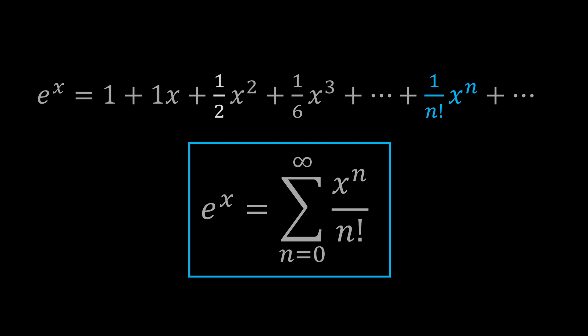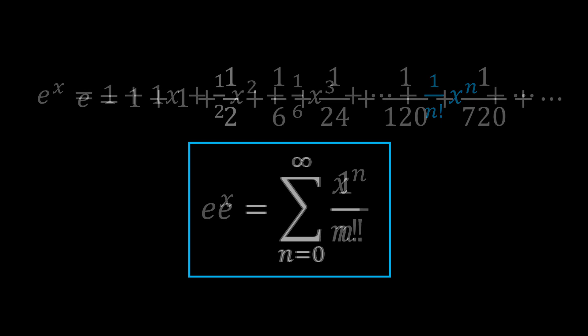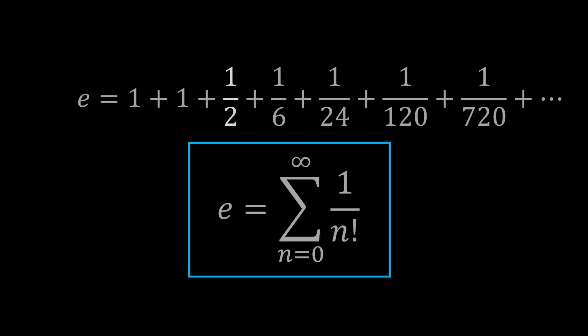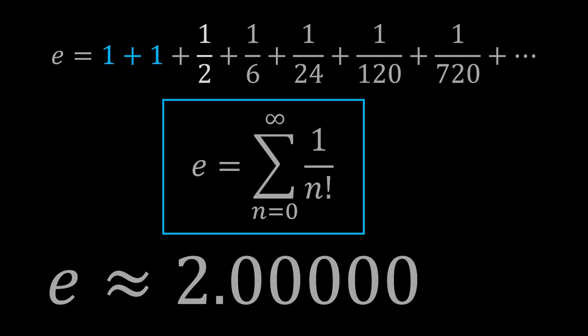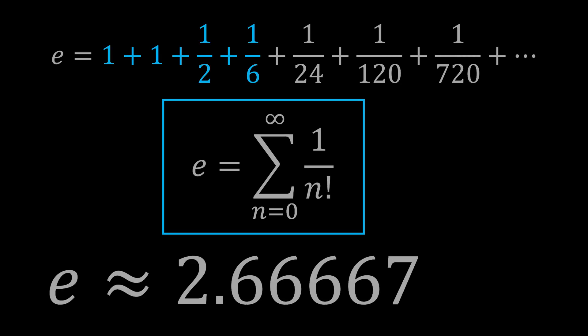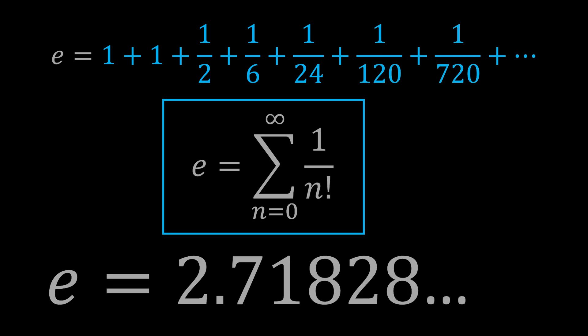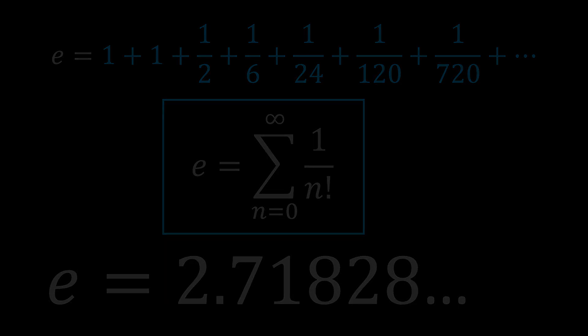Therefore we can write E to the x as the sum of xⁿ divided by n factorial, where n runs from 0 to infinity. Remember that 0 factorial equals 1. Now, how do we solve for E? Easy — set x equal to 1. Then E to the 1 equals 1 plus 1 plus 1/2 plus 1/6 plus 1/24 plus so on. Get out a calculator and you can see how quickly the series converges toward the value of 2.71828 and so on. And that is why E is E.